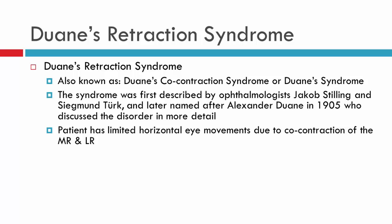Duane's Retraction Syndrome is also commonly called simply Duane's Syndrome, or you may come across the term Duane's Co-Contraction Syndrome, and this will become clearer as we discuss the etiology of the condition. The syndrome was first described by ophthalmologists in the late 1800s, Jacob Stilling and Sigmund Turk, but it wasn't until Alexander Duane in 1905 described it in more detail that it was named after him.